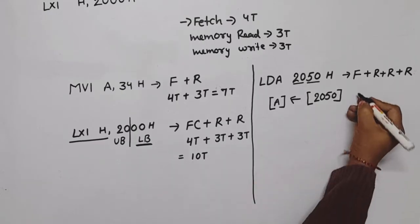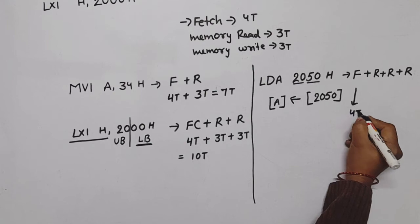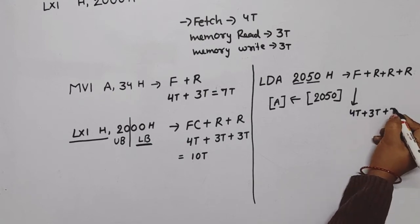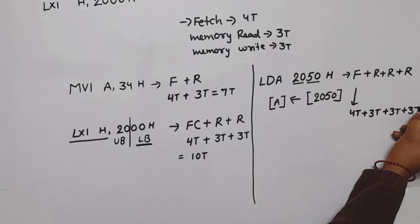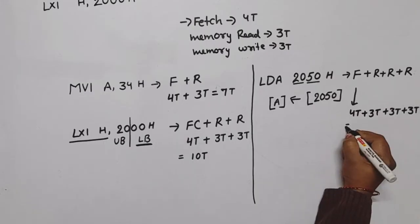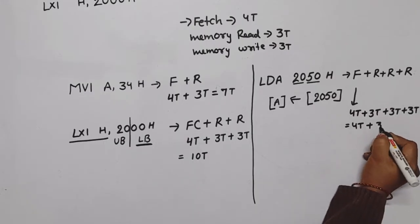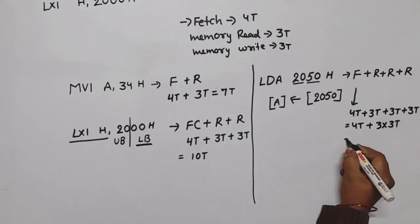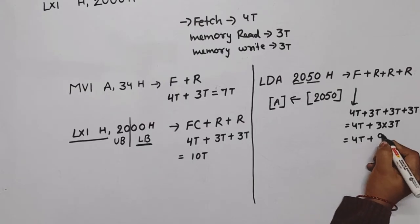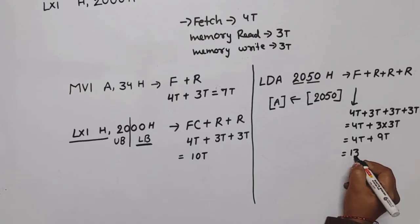So now how many T? For fetch 4T, for first read 3T, second read 3T, and third read 3T. You can write or you can write 4T plus 3 into 3T is equal to 4T plus 9T is equal to 13T. Clear, that LDA how much will it be, 13T.